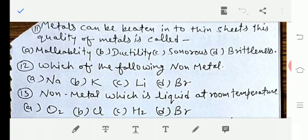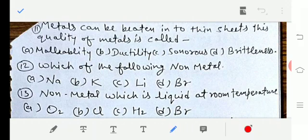Metals can be beaten into thin sheets. This quality of metals is called: option A malleability, option B ductility, option C sonorous, option D brittleness. So the answer is option number A, malleability.